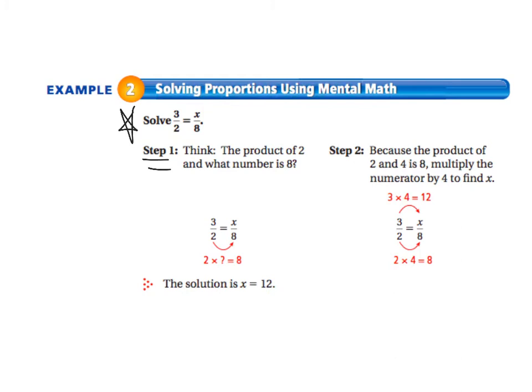So we're looking down here. 2 times what equals 8? And our answer, of course, is 4. So 2 times 4 equals 8.